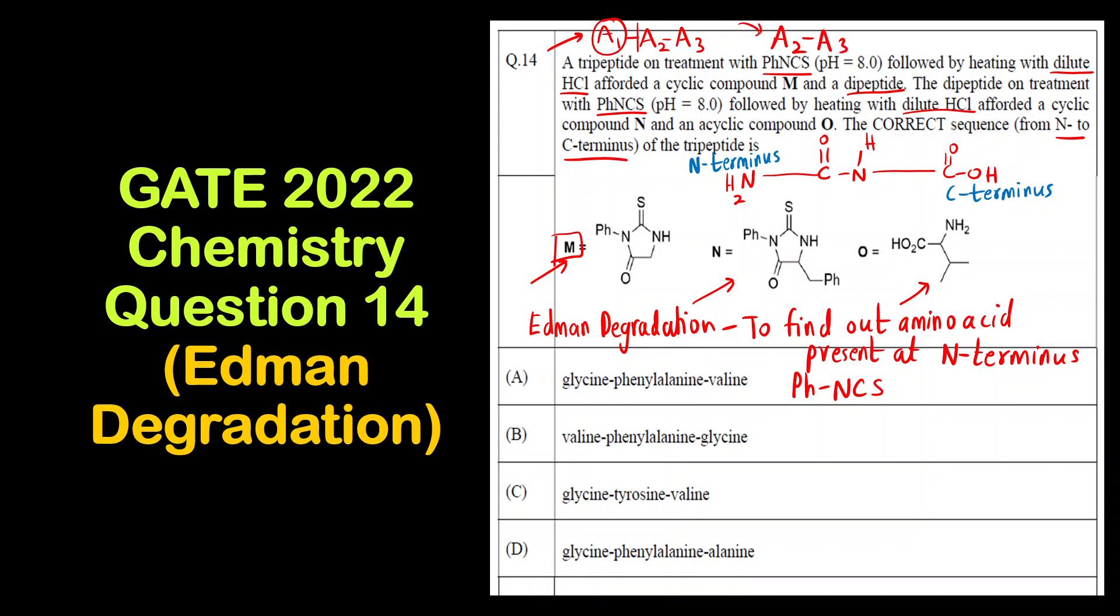Now this A2 amino acid must also have an N terminus. So PHNCS is already present in the reaction mixture. So it will react with this A2 amino acid as well, that is the second amino acid, and again form a cyclic product that is N and what is remaining is the A3, that is the acyclic fragment.